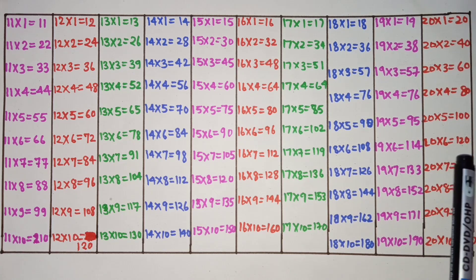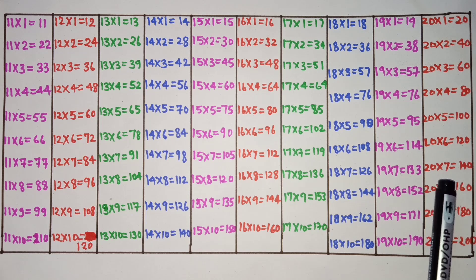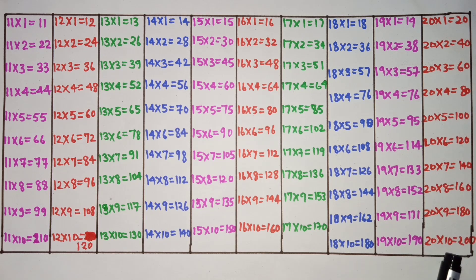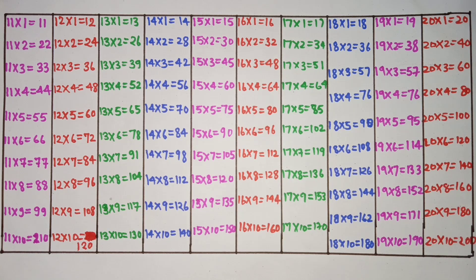20 fives are 100, 20 sixes are 120, 20 sevens are 140, 20 eights are 160, 20 nines are 180, 20 tens are 200. Thank you.